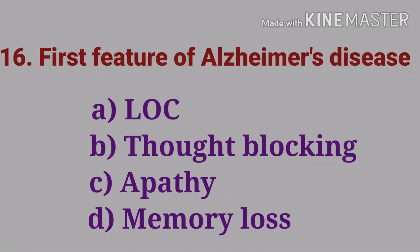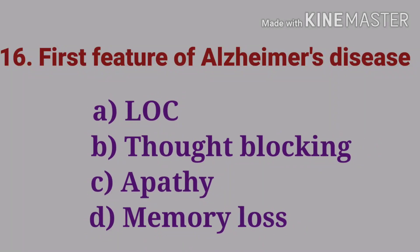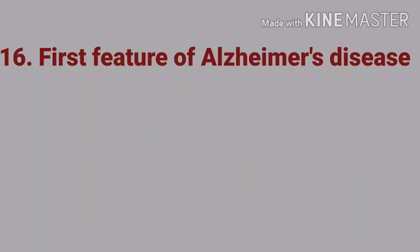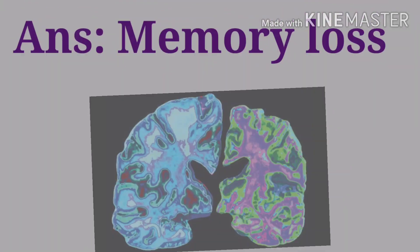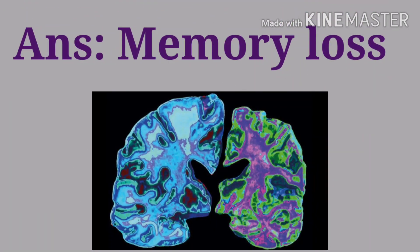The sixteenth question: first feature of Alzheimer's disease — options are loss of consciousness, thought blocking, apathy, and memory loss. The answer is memory loss.